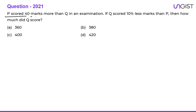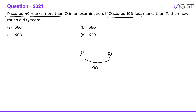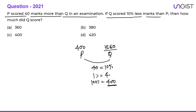Next question: P scored 40 marks more than Q. Q scored 10% less than P. So 10% of P = 40, which means P = 400. Q scored 40 less than P, so Q = 360. Q scored 360 marks. This was an important topic with several questions in the last 10-11 years; please prepare it well for your CSAT exam.